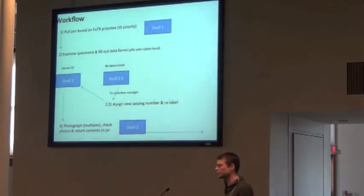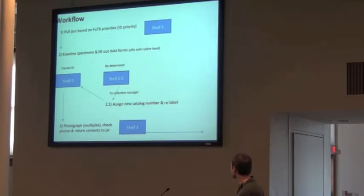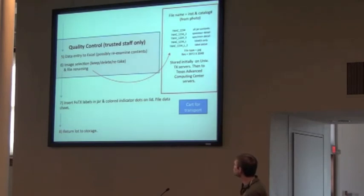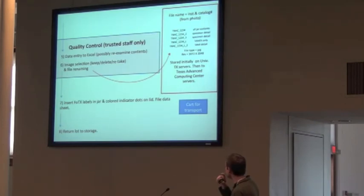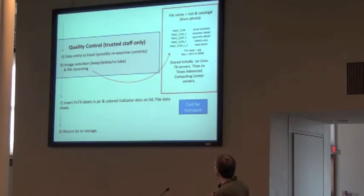We found we have to identify our specimens first because we find huge error rates in identification. So if we start digitizing before we do the IDs, we would end up having a lot of photos with wrong species. So we photograph the jar, the specimens often multiple times, check the photos, return the contents to the jar, and then they go to shelf three. Then there's quality control, where a trusted staff member does data entry and review. They pick out the images we're going to keep or delete and retake if necessary. The file name is basically institution catalog number, which can be extracted by opening the photo and looking at it, because it's in the photo. Just the institution catalog number would be all the jar contents. If it had a suffix after that, it would be a specimen detail.